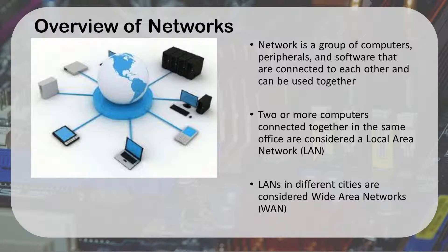To have a network, you really only need two things — at least two computers or two devices — and that would create your network. If you take two or more computers and connect them together inside of an office, this is usually what's called a local area network, because it's a local connection, very close to you. LANs that are in different cities, if you connect them together, they become part of what's called a wide area network.